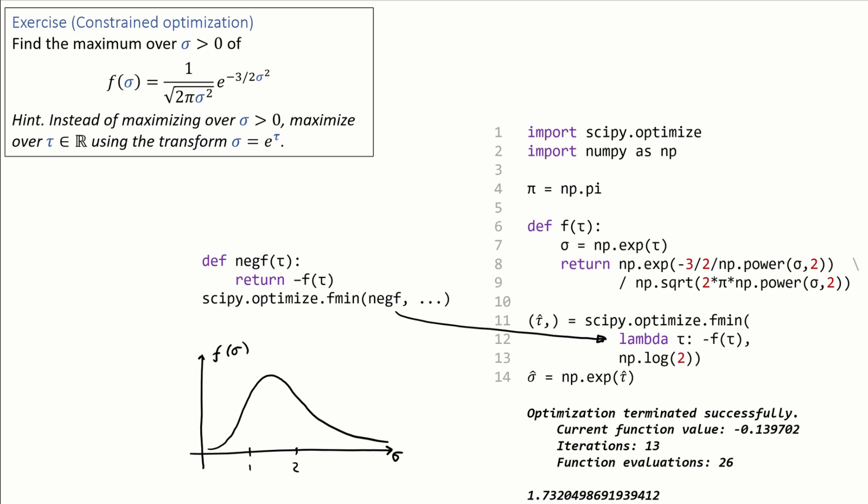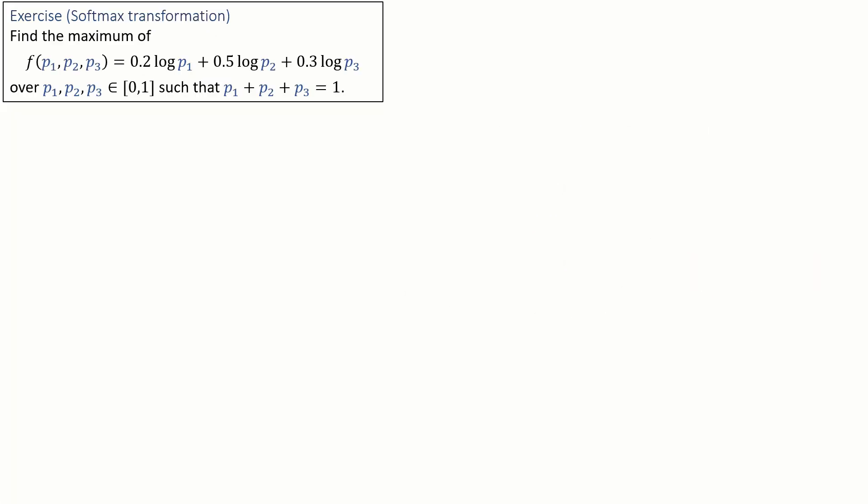Next example: find the maximum of some function f which takes three arguments p1, p2, p3 over p1, p2, p3. They have to be in the range zero to one and they have to sum up to one. There's a transform we can use for this. It's widely used in machine learning and it's called the softmax transform.